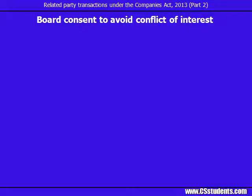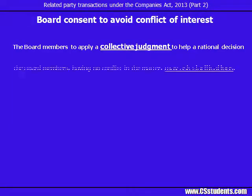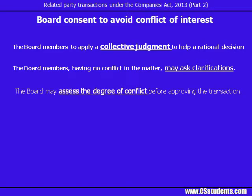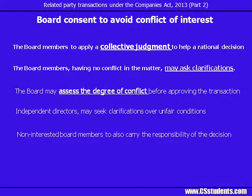If the proposed related party transaction is being discussed in the Board meeting, several Board members would apply collective judgement to the matter and reach a rational decision. The Board members having no conflict in the transaction may ask questions and seek clarification. The Board may assess the degree of conflict before approving the transaction. If there are independent directors on the Board, they can seek clarifications over unfair conditions in the proposed contract. And if the matter has been decided by the Board, non-interested directors also carry the responsibility of the decision.